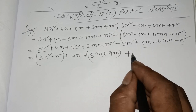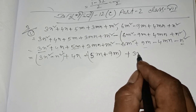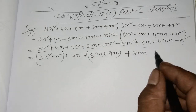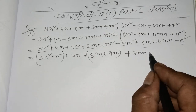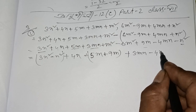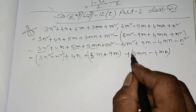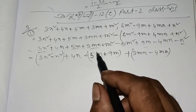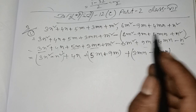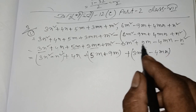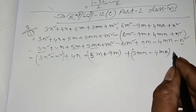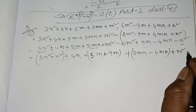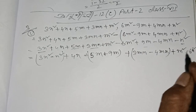So this means 3mn. 3mn minus 4mn. And m squared, m squared — plus m squared minus 6m squared.